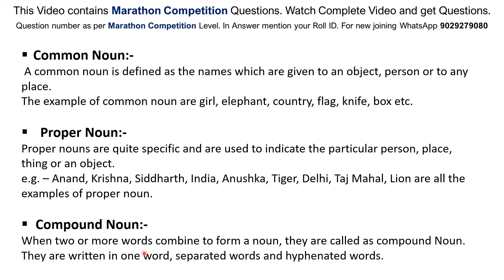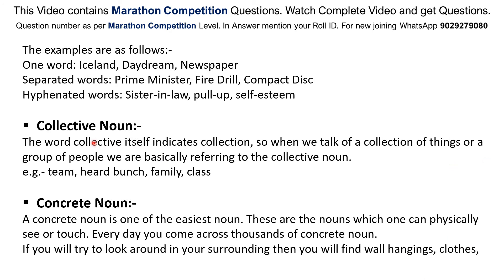Compound Noun. When two or more words combine to form a noun, they are called a Compound Noun. They are written as one word, separated words, or hyphenated words. Examples: one word — Iceland, Daydream, Newspaper; separated words — Prime Minister, Fire Drill, Compact Disc; hyphenated words — Sister-in-law, Pull-up, Self-esteem.